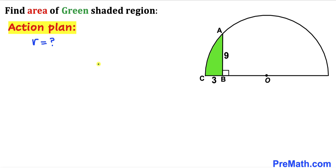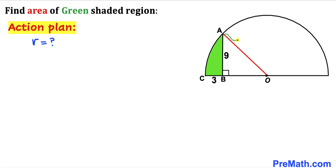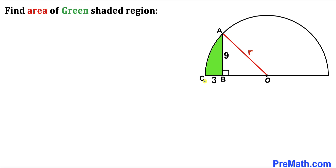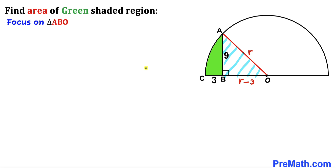Here's our action plan. Before we can calculate the area of the green shaded region, we must find the radius of the semicircle. I've connected points A and center O, so AO is our radius r. We can see that CO is also radius r, and since BC is 3, segment OB is going to be r minus 3.